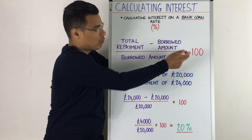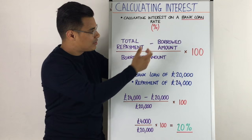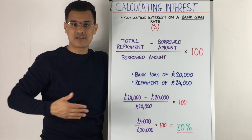Remember this formula and think common sense. The bank loan is that borrowed amount — it's the same thing. So it could be: total repayment minus the original bank loan, divided by the original bank loan, times by 100. It's the same thing. The amount you're borrowing is the bank loan.